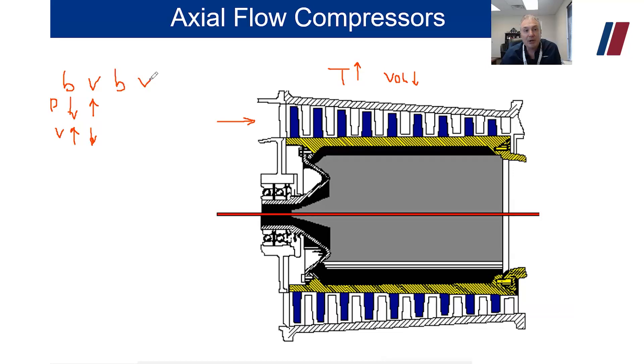And that happens over and over and over again. The key to remember, as we go down the stages of compression, and keep in mind, a stage of compression is a set of blades followed by a set of veins. As this goes through, velocity continues to increase throughout the compressor. So overall, velocity goes up and pressure goes up.